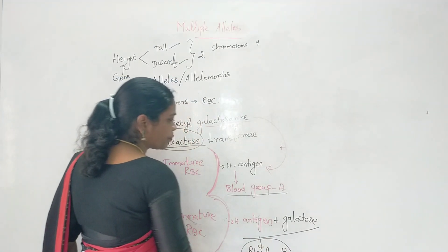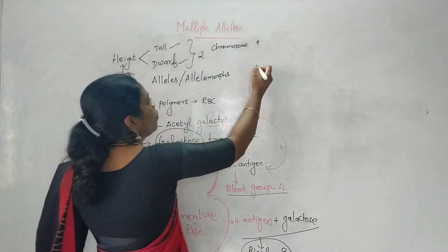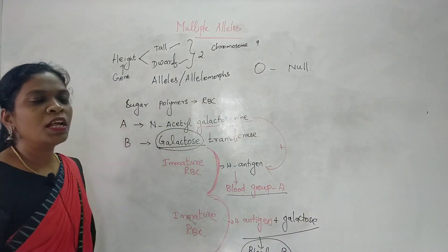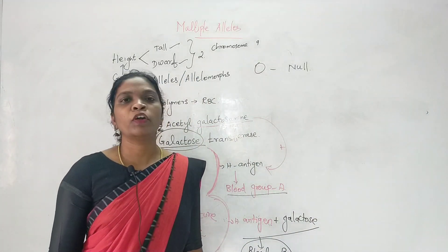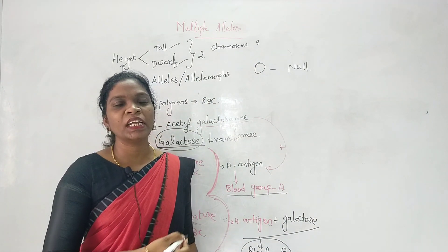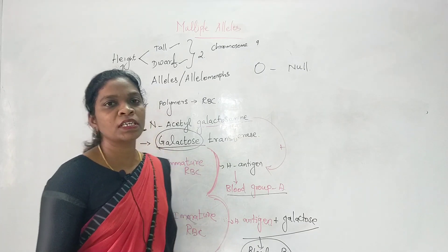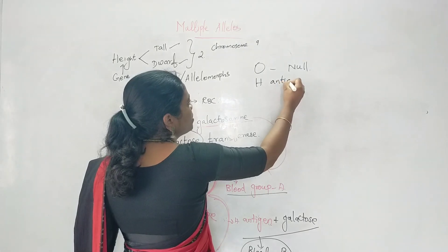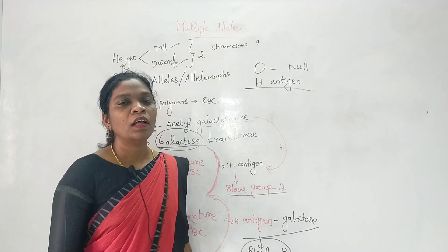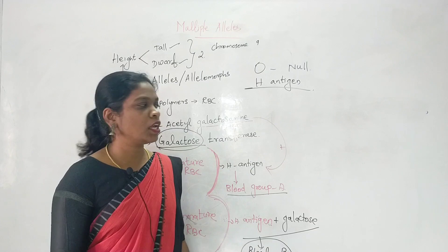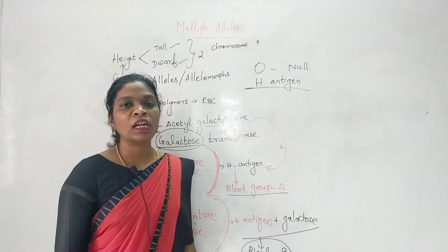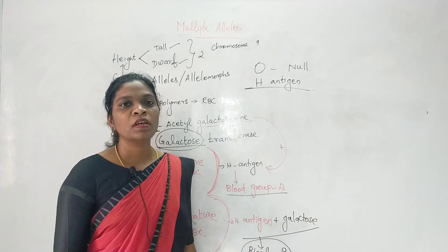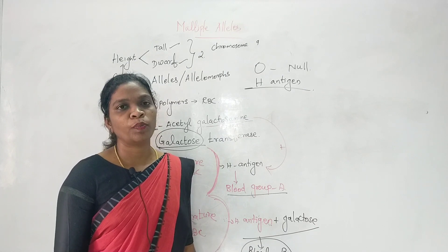Blood group O is known as null because O blood group does not produce any kind of protein or transferase enzyme. Therefore, the H antigen remains unchanged with no modifications. By the next video, we will learn about RH blood grouping, RH incompatibility, and hypotheses based on RH blood grouping.